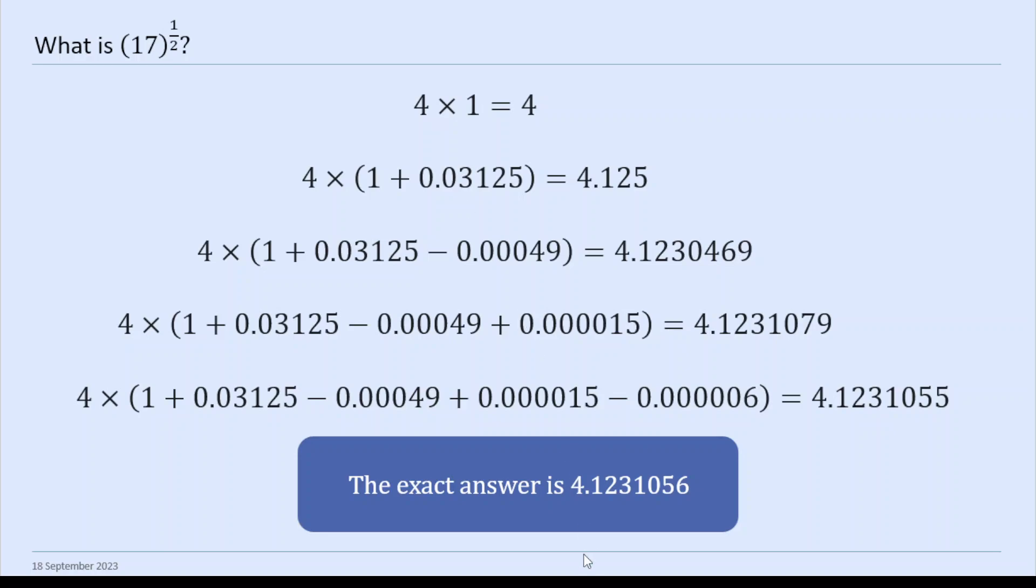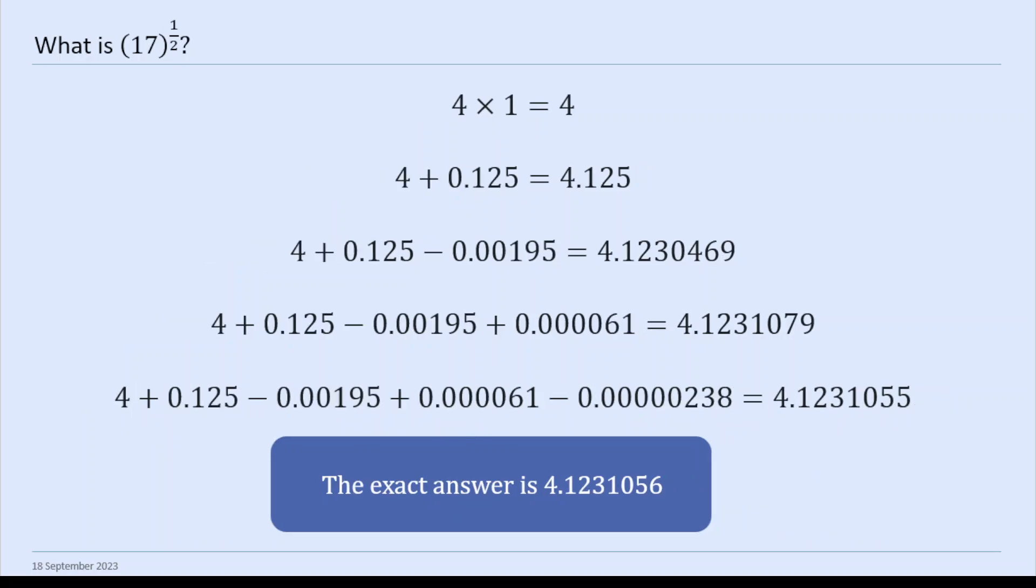And then if we just crunch out what these terms are, the actual answer is 4.1231056. Just use one term, you get 4. It's not that far off. You use two terms, 4.125. Not bad. Three terms comes to 4.123. Closer. And then right down at the bottom, 5 terms. We're almost there. It's only the last digit that's not quite right. It's really impressive, isn't it?